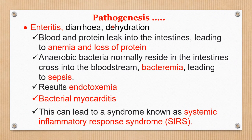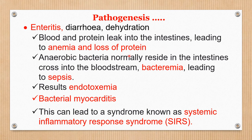Continuing pathogenesis: the virus attacks the intestine, present in intestinal crypt epithelium, causing severe gastroenteritis and severe bloody diarrhea, leading to rapid dehydration. Due to severe intestinal damage, blood and protein leak into the intestine, leading to anemia and loss of protein. The clinician must provide treatment for anemia and replace lost protein. In the intestine, anaerobic bacteria normally present can cross into the bloodstream, producing bacteremia and finally leading to sepsis.